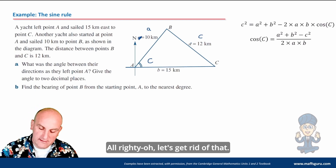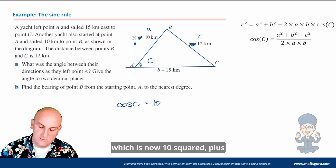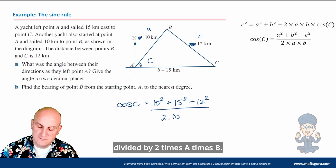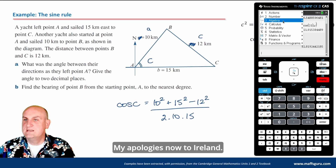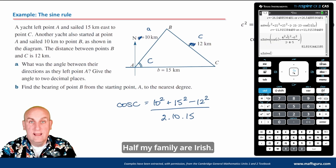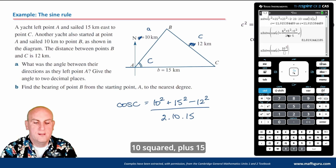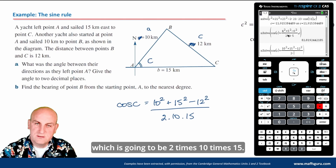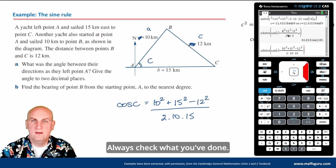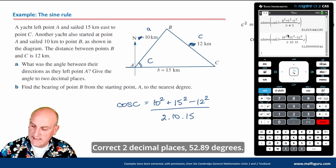I'll call the angle I want capital C, so that side is little c equals 12. The sides hugging the angle are a equals 10 and b equals 15. The formula is: cosine of C equals (10 squared plus 15 squared minus 12 squared) divided by (2 times 10 times 15). Typing into the calculator: cos(c) equals (10 squared plus 15 squared minus 12 squared) divided by (2 times 10 times 15), comma c.